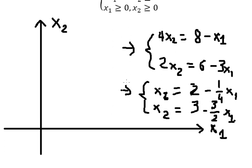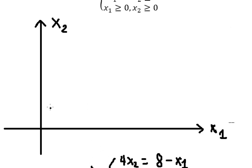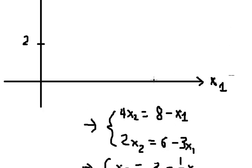Now we need to graph this. When s1 equals zero, s2 equals two, so two should be plotted here. When s2 equals zero, we can find s1 — we move two to the left and divide both sides by negative one over four, giving us s1 equals eight.